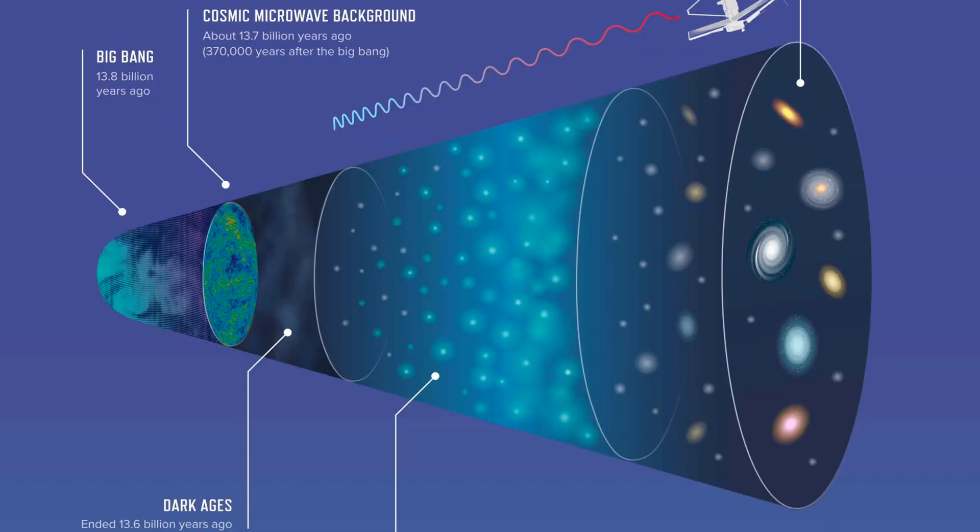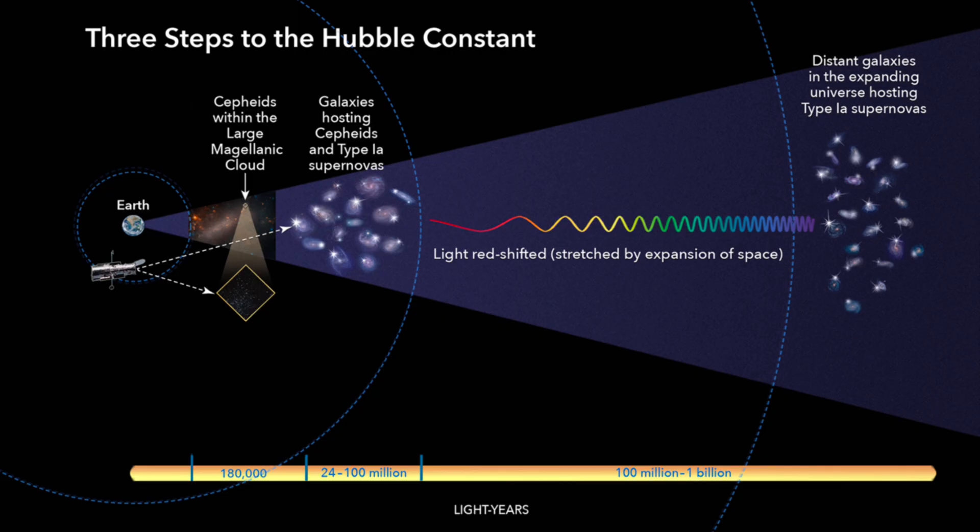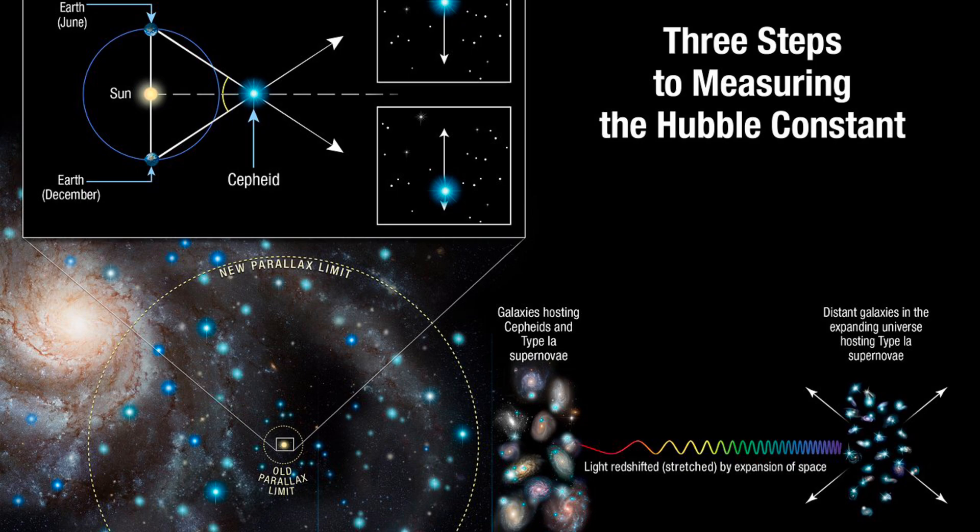Another prediction of the Big Bang Theory is that the universe should have a specific expansion rate, known as the Hubble constant, which is determined by the amount of matter and energy in the universe. This expansion rate has been confirmed through observations of distant galaxies and has helped to refine our understanding of the universe's age and size.